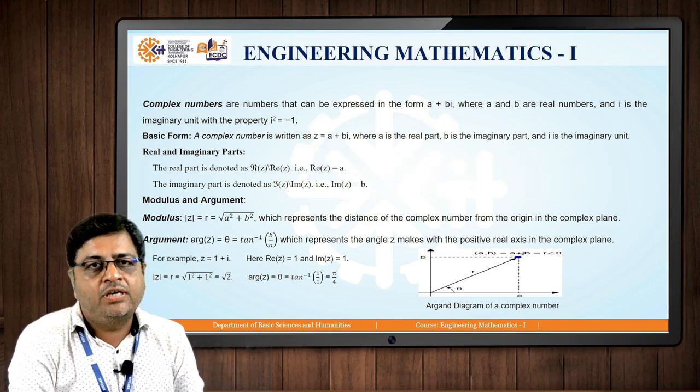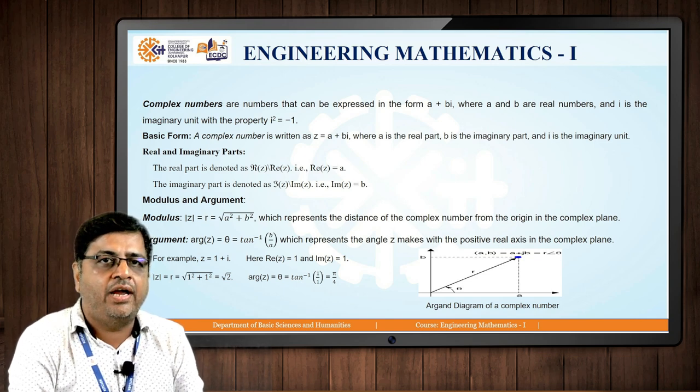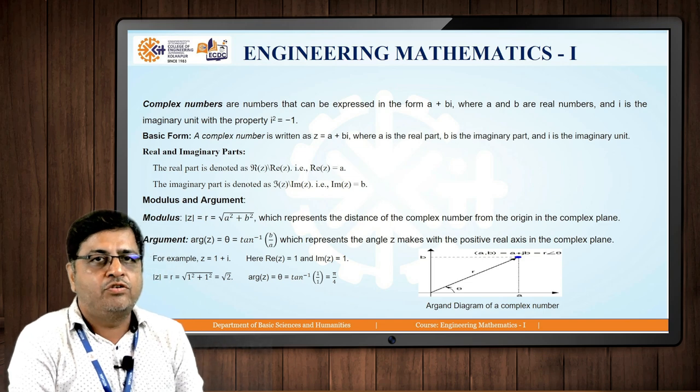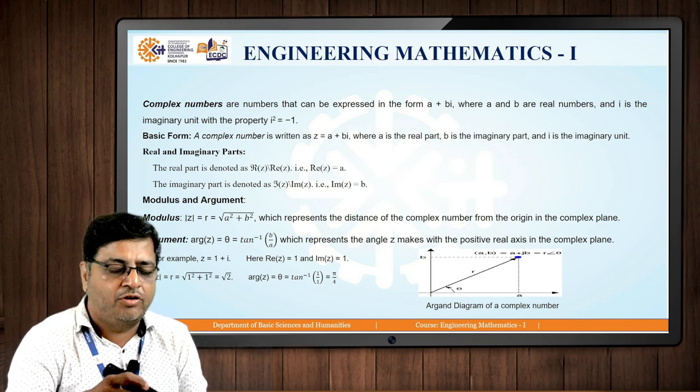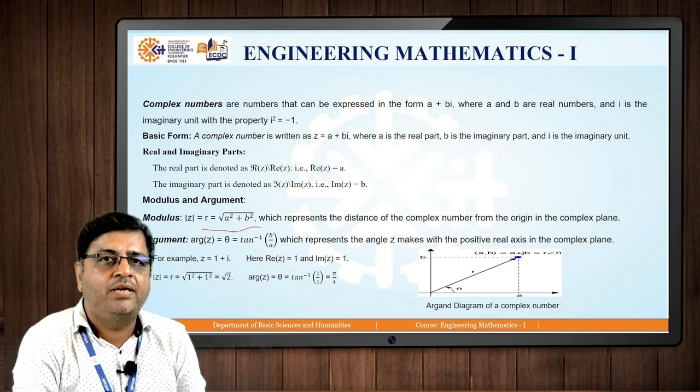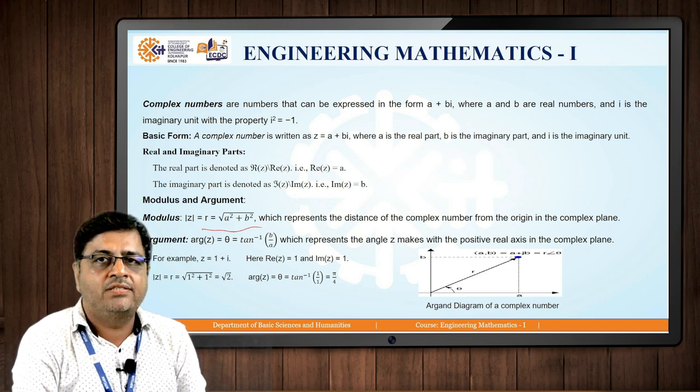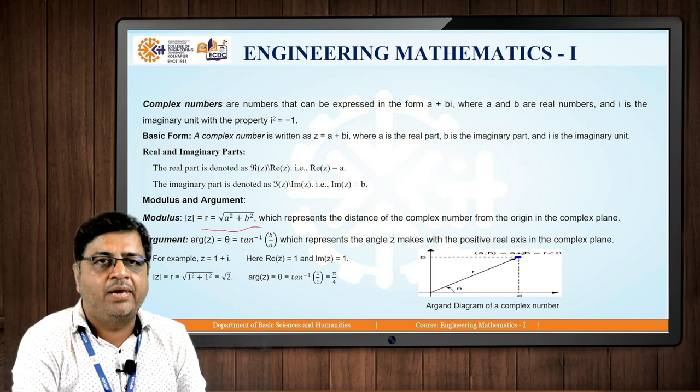There is one more concept in complex number and that is modulus and argument of a complex number. Modulus is R is equal to under root of A square plus B square, which represents the distance of complex number from origin in complex plane.